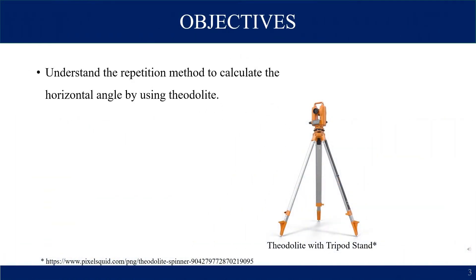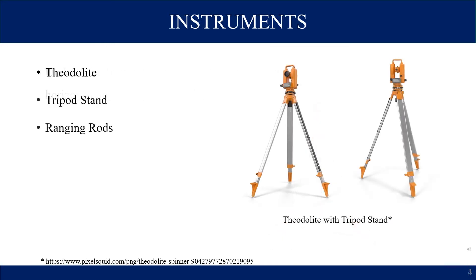The main objective of this practical is to understand and measure the horizontal angle by using theodolite and also to understand the repetition method. Instruments used in this practical are theodolite, tripod stand and ranging rods.